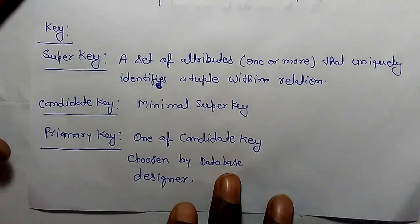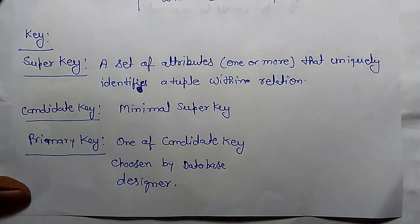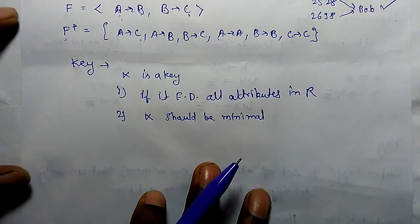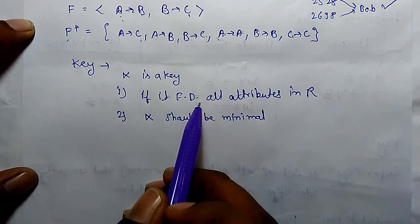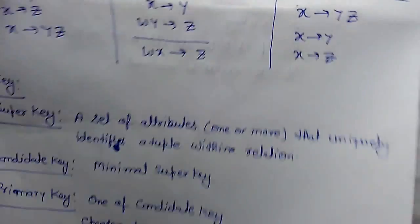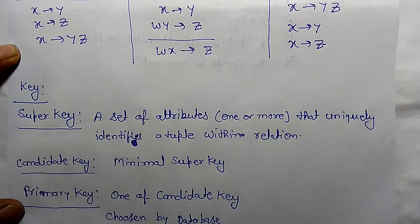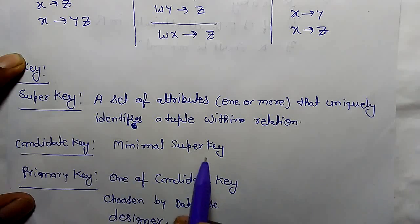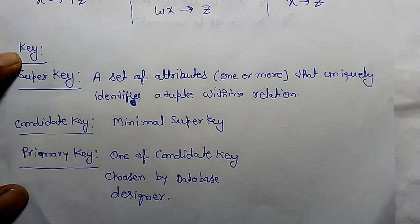So what is a key? Basically we use three types of key. Super key is a set of attributes that uniquely identifies a tuple within a relation. A key functionally determines all attributes in R, and if it is minimal then we take it as a key. Candidate key is the minimal super key — the minimum length of super key can be a candidate key. And from the candidate keys, one can be chosen as the primary key.